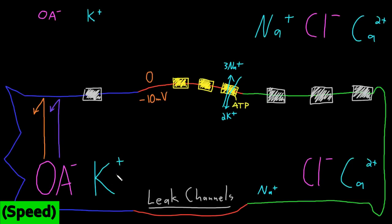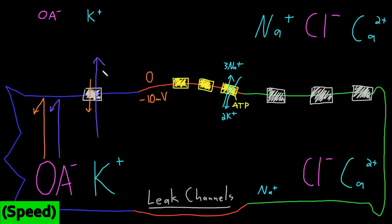There are now opposing forces on potassium ions. The electrical force tries to drive these cations into the more negative inside of the cell, but the diffusion force tries to drive potassium out from higher to lower concentration. At typical neuron ion concentrations, the diffusion force is much larger than the electrical force, so the net electrochemical driving force — the larger diffusion force minus the smaller electrical force — causes a net movement of potassium ions out of the neuron through the leak channels.